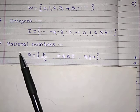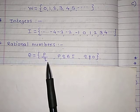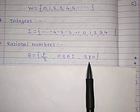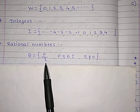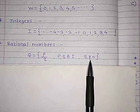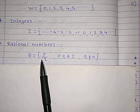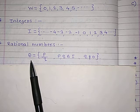Next, rational numbers. Rational numbers are the numbers which are in the form of P by Q, or P divided by Q, where P and Q belong to integers. One condition is there: Q is not equal to 0. If the value of Q is 0, it is undefined. For example, 2 divided by 3, 5 divided by 6, 7 divided by 8 — these are all rational numbers. Rational numbers are denoted by the letter Q.